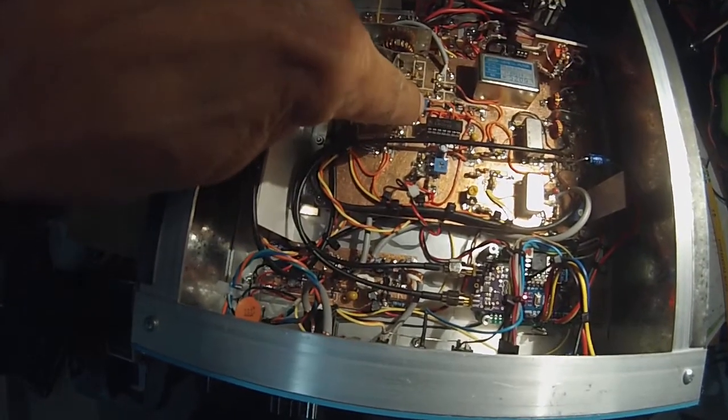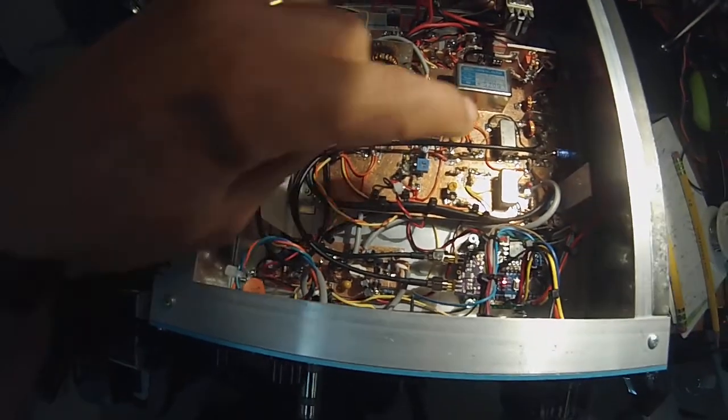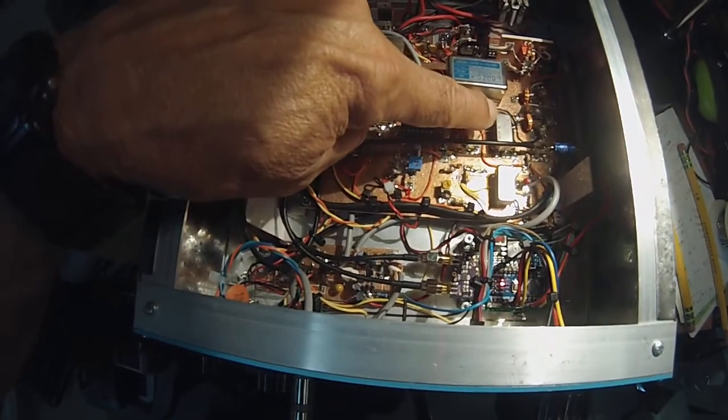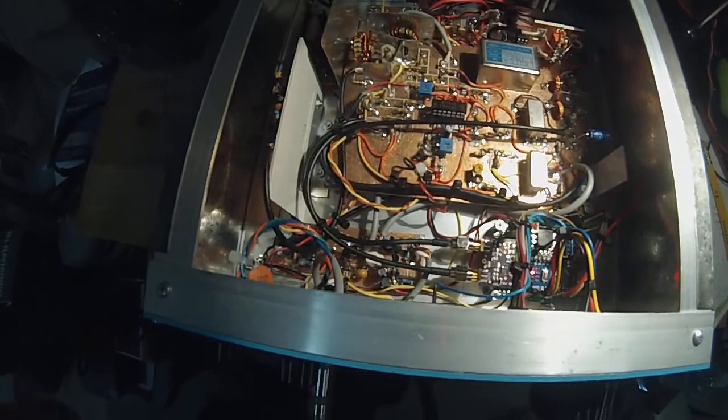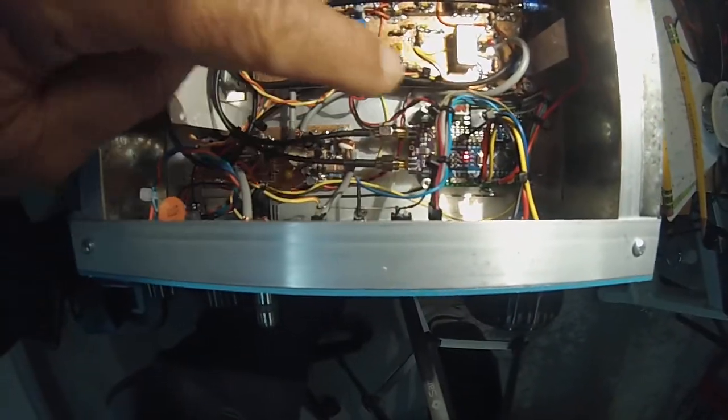There's the single LM373 which is the heart of this radio. Two SBL1s: this one is the receiver mixer and this one is the balance modulator. And of course the Arduino is sitting right down in here.